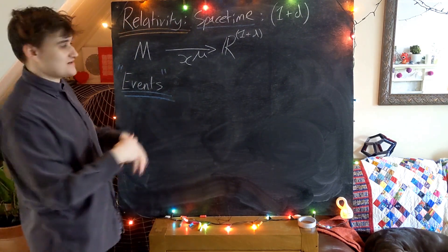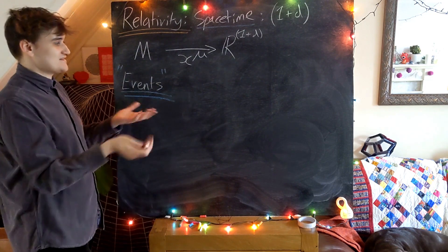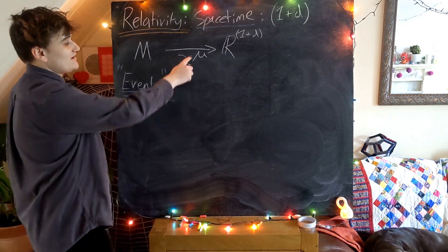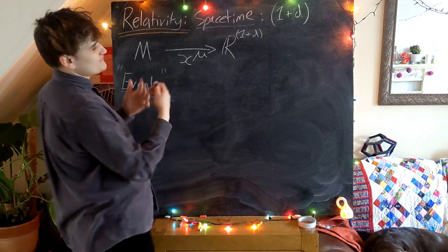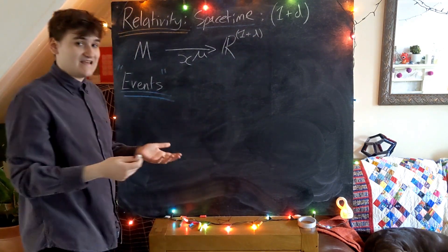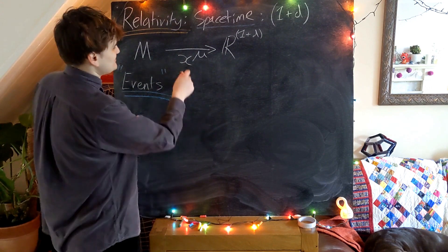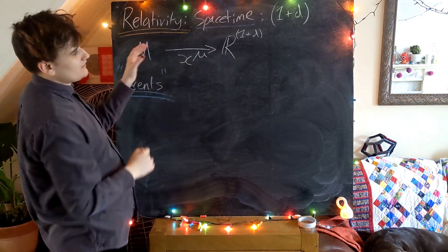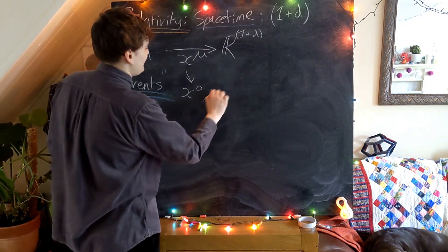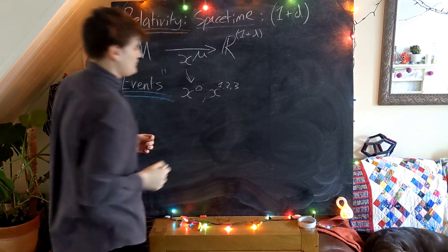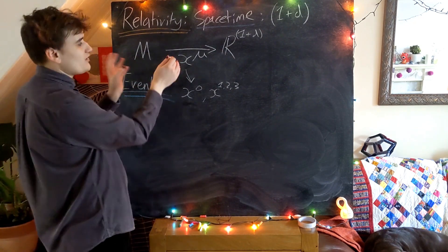If you haven't seen index notation before, I've got other videos about tensors. The index is going to run from zero up to D — by convention we start indices at zero, so it runs from 0 to D (which would be D+1 values). So in four-dimensional space-time, x^mu gives us x^0, x^1, x^2, and x^3. We like to separate out these space and time coordinates, even though they're intrinsically all part of the same object, and we still like to distinguish between them.